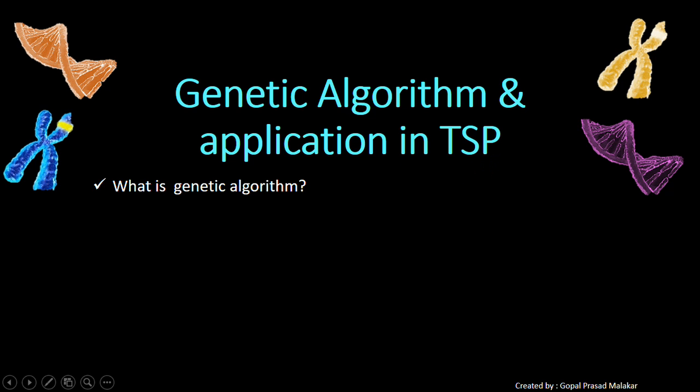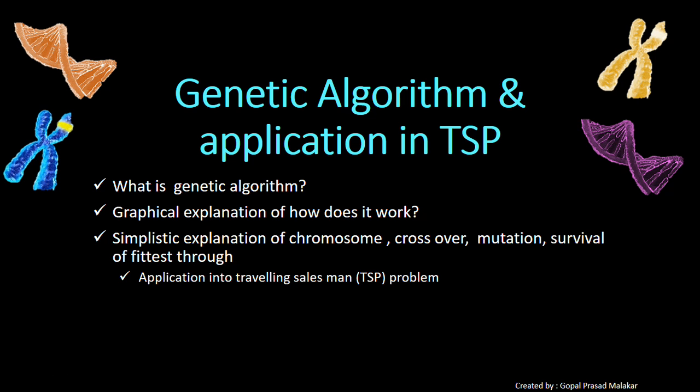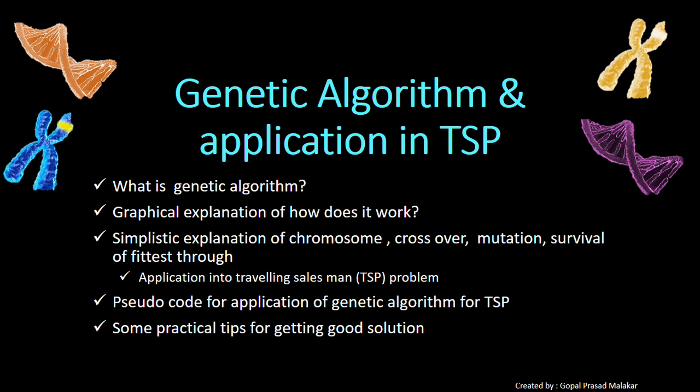You will understand what is genetic algorithm, a graphical explanation of how it works, a simplistic explanation of chromosome, crossover, mutation, survival of the fittest through an example of Travelling Salesman Problem, a pseudocode for application of genetic algorithm for TSP, and some practical tips for getting good solution.